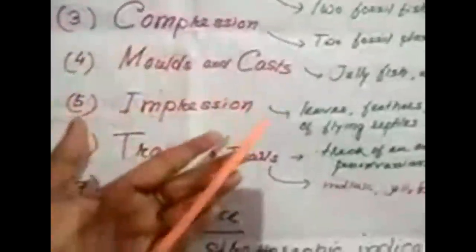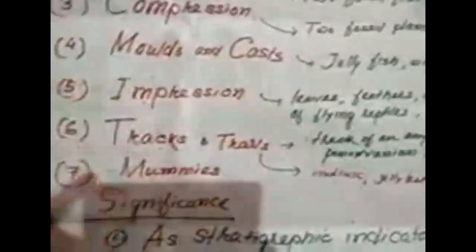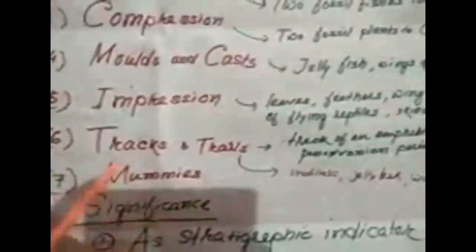Number four: molds and casts. In the case of soft organisms like jellyfish and wings of insects, the surrounding material becomes hard and the organism inside becomes disintegrated, resulting in hollow cavities. A natural deposit filling this cavity forms a natural cast. If filled artificially with plaster of Paris, it forms an artificial cast. This combination is the mold and cast.